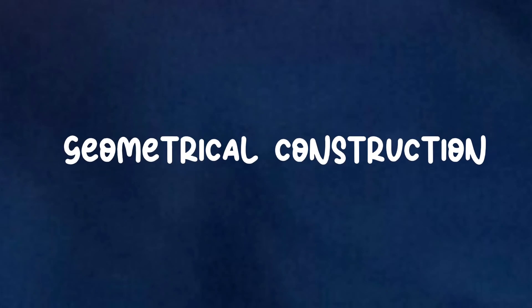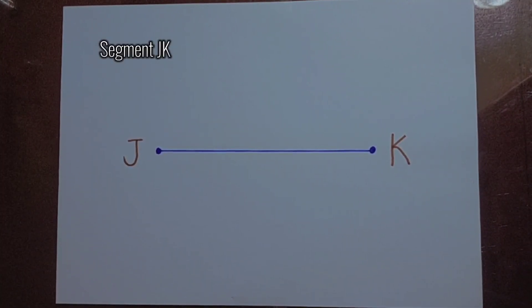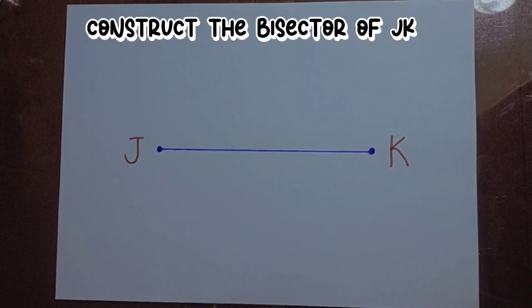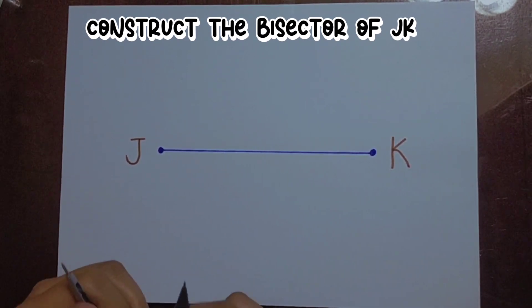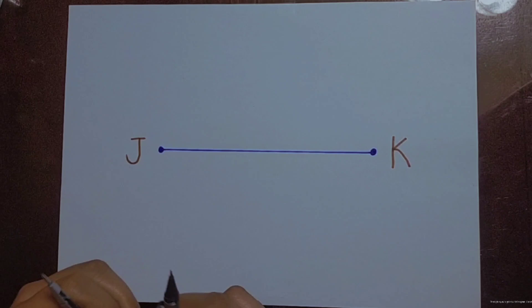Geometrical Construction. Segment JK. Construct the bisector of JK. A bisector divides something into two equal parts. Meaning to say, our target is to divide segment JK into two equal parts.